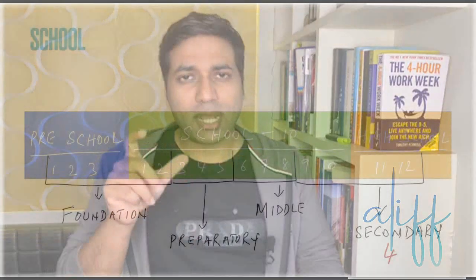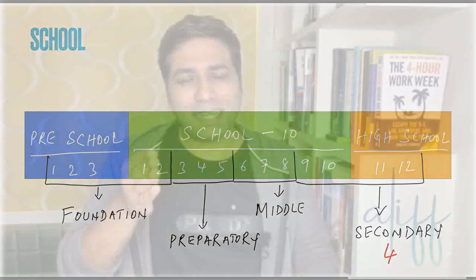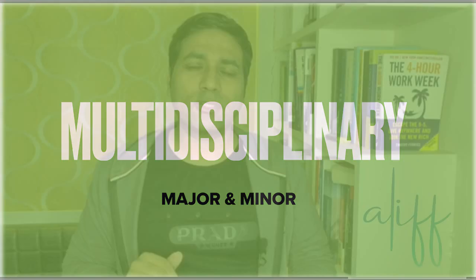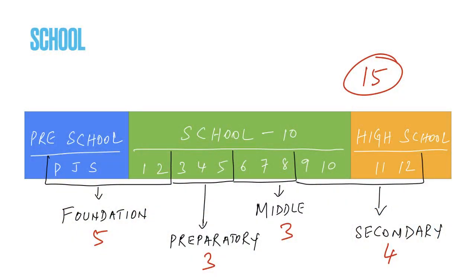The last block is called the Secondary Stage — 9th, 10th, 11th and 12th standard — which introduces multidisciplinary studies. So the full structure is 5 plus 3 plus 3 plus 4, equal to 15 years.